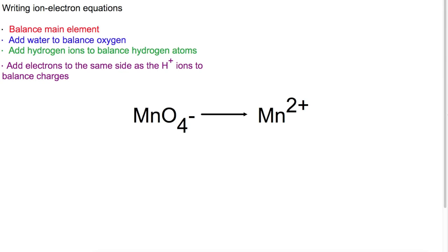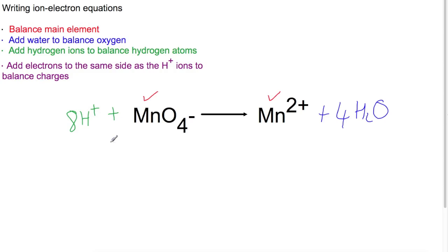The second example has permanganate MnO₄⁻ becoming manganese ions Mn²⁺. Step one — the manganese is balanced. Step two — there are 4 oxygens, so add 4 water molecules to the right. Step three — 4 × 2 gives 8 hydrogen atoms, so add 8H⁺ to the left. Checking charges: 8 minus 1 equals 7 on the left, and 2+ on the right. We add electrons to the same side as the H⁺ ions; to bring 7 down to 2, we need 5 electrons added to the left.